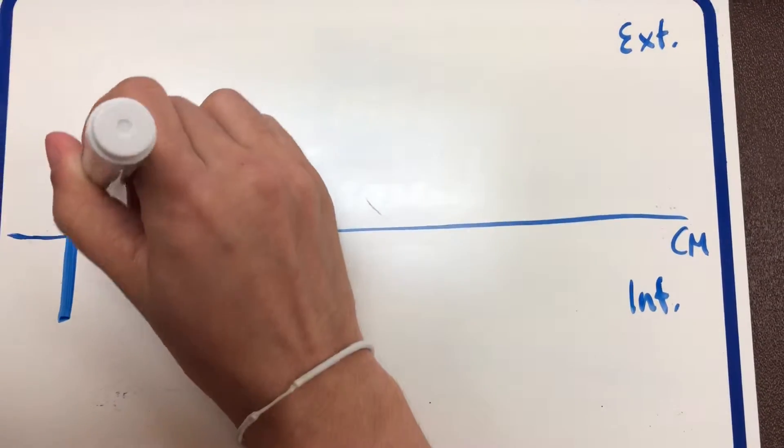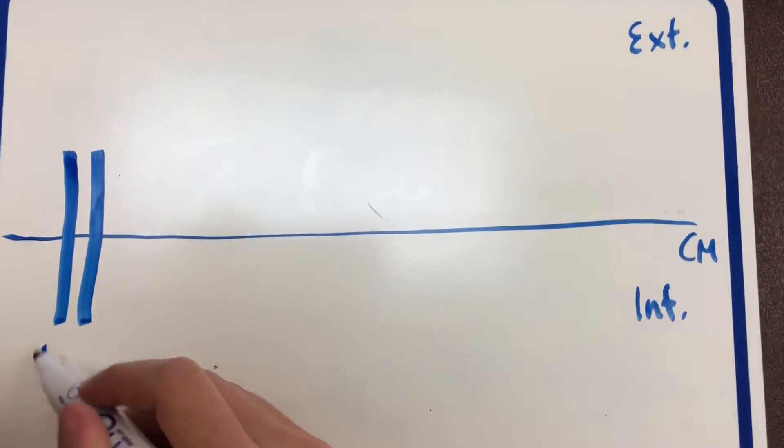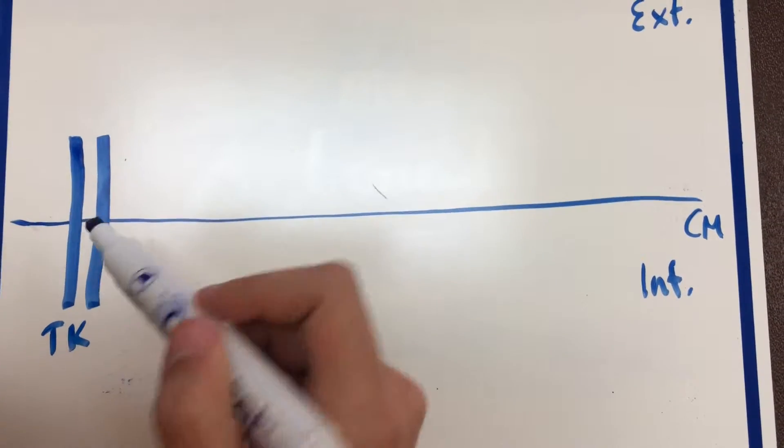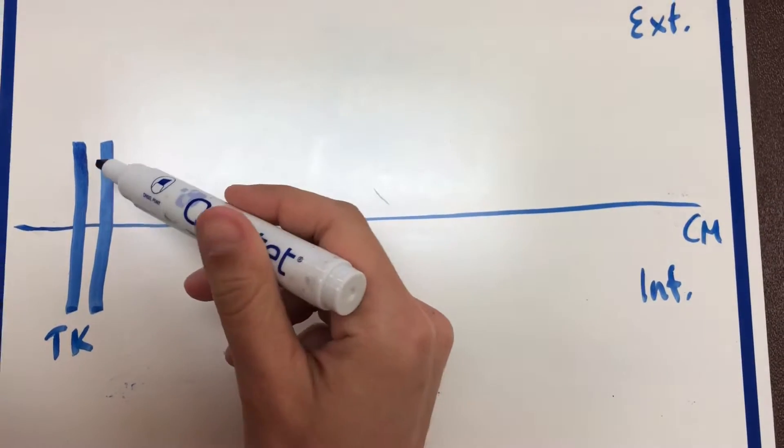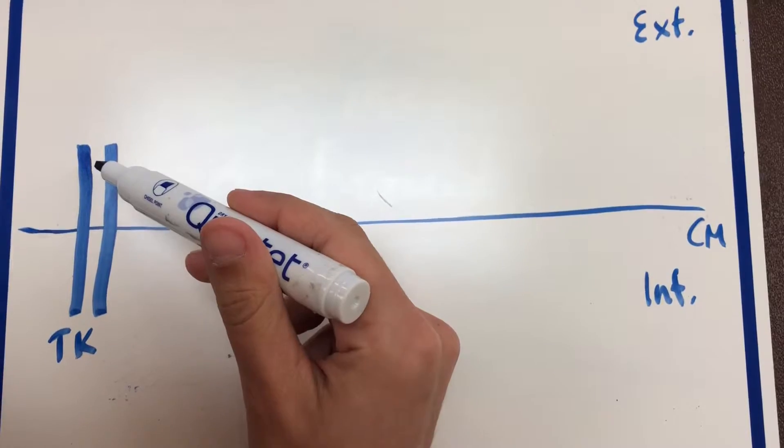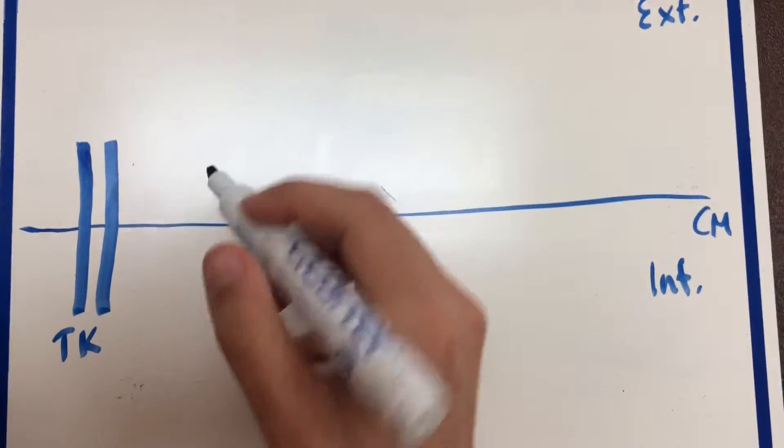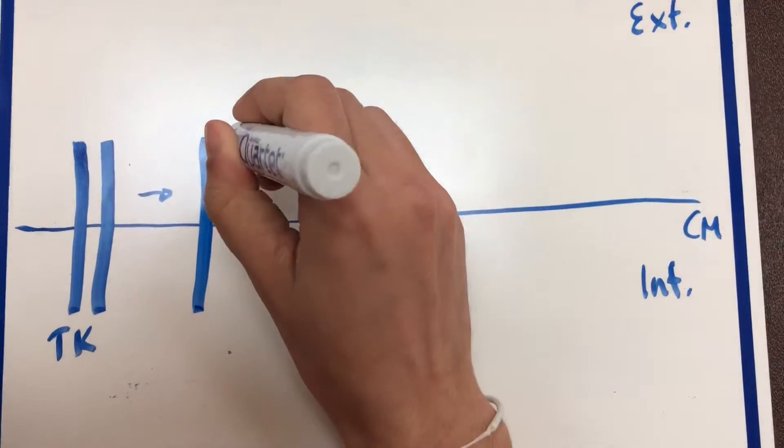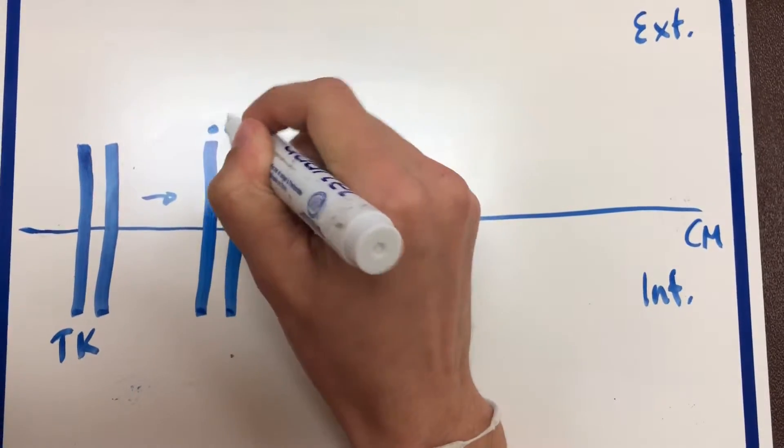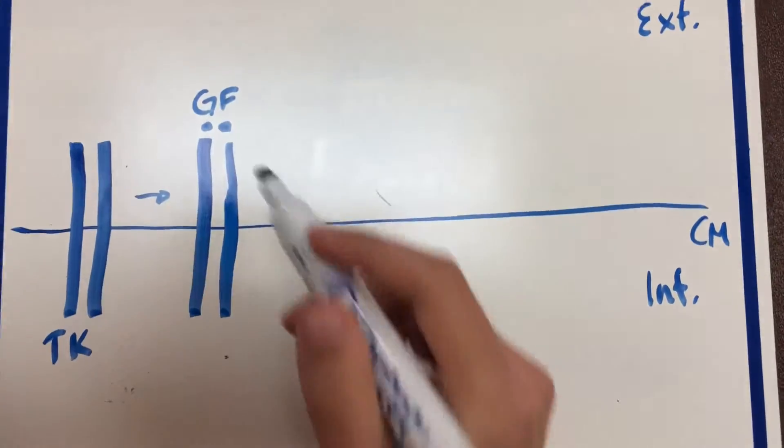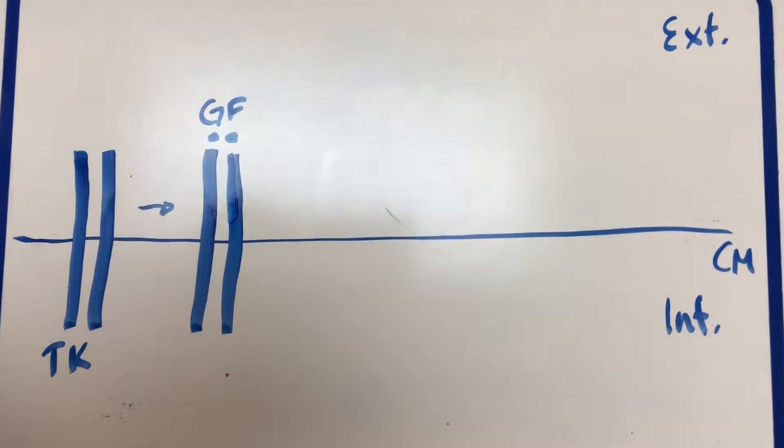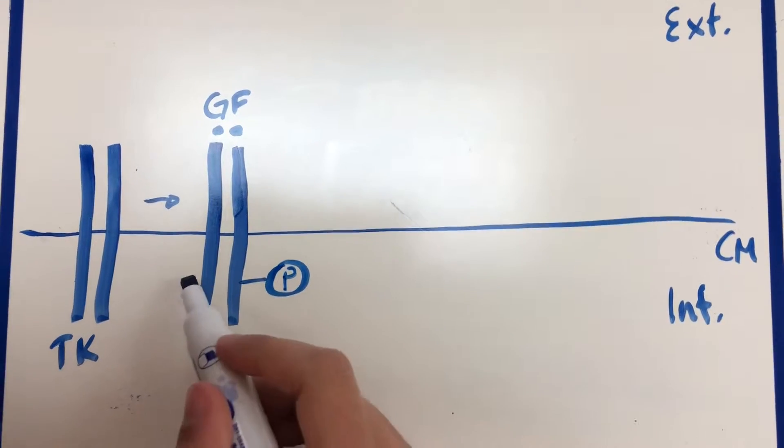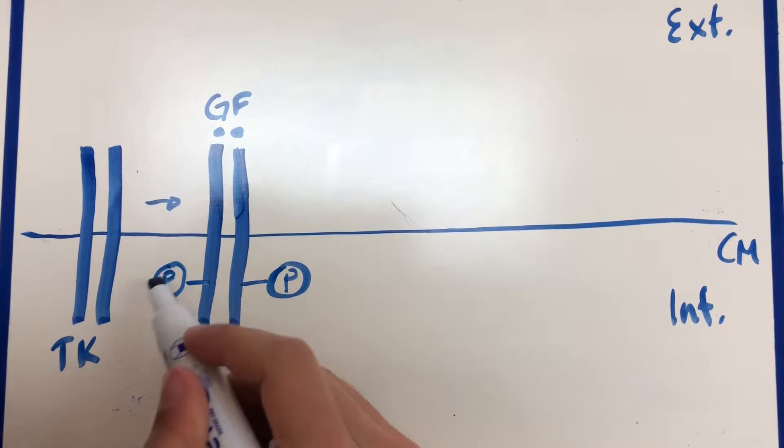So in our cell membrane we have this guy here which is a tyrosine kinase receptor. So as you can see I drew two lines that are the same thing. It's a homodimer. It has an intracellular part and an extracellular part. So this tyrosine kinase receptor is going to bind growth factor or growth factors extracellularly. When it binds extracellular growth factors it gets activated, which is like phosphorylation for tyrosine kinase.